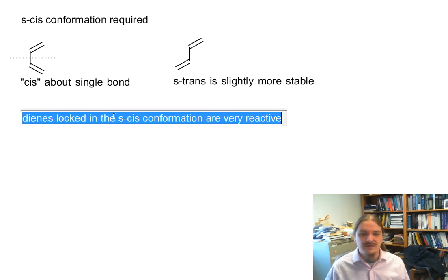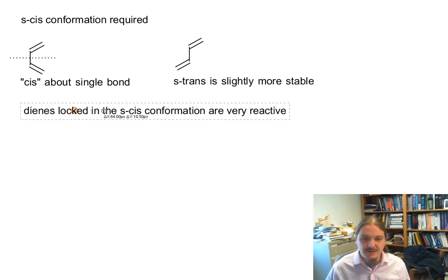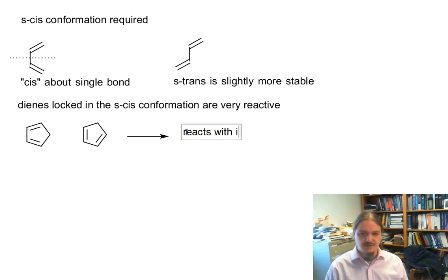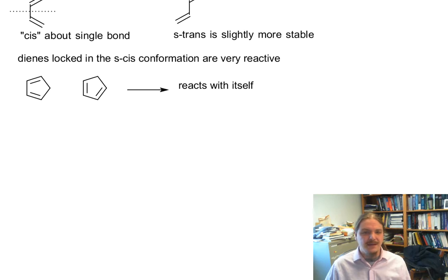Classic example often cited, but certainly is not the only example, is cyclopentadiene. Cyclopentadiene is actually so reactive that it can react with itself and produce a Diels-Alder adduct. In fact, cyclopentadiene is not stable under normal conditions. It exists as a dimer. It has to be regenerated.